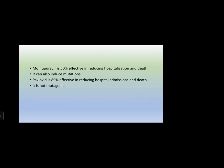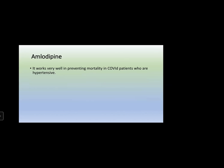Molnupiravir is 50-59% effective in reducing hospitalization and death, and it can also reduce mutations. However, molnupiravir is mutagenic whereas Paxlovid is not mutagenic. Pfizer claims Paxlovid is 89% effective in reducing hospital admissions and deaths. Currently, Merck and Pfizer are the two companies that have developed oral drugs for COVID-19 treatment. Paxlovid is the drug of greater concern now, and amlodipine also works well in preventing mortality in COVID patients who are hypertensive.